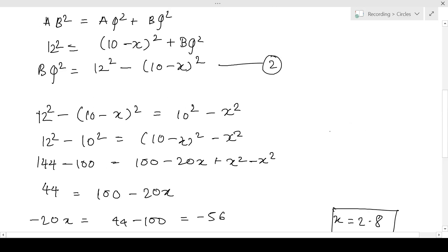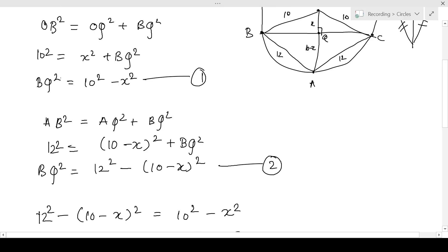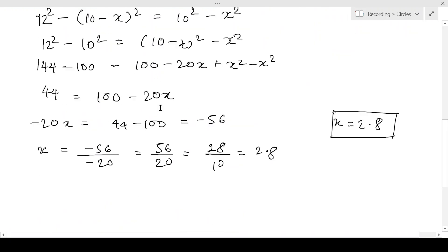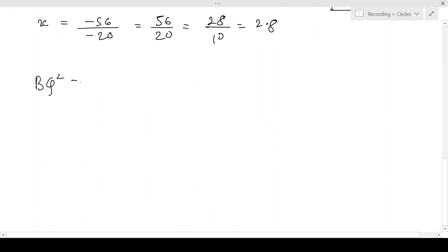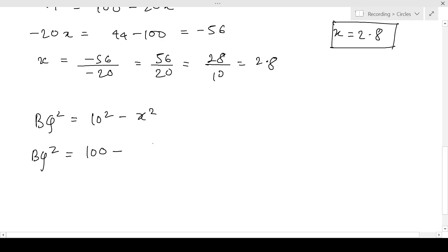So now let's insert this value in equation number 1. BQ square is equal to 10 square minus X square. That gives us BQ square is equal to 100 minus 2.8 whole square, that is 100 minus 7.84 is 92.16. So BQ is equal to root 92.16.